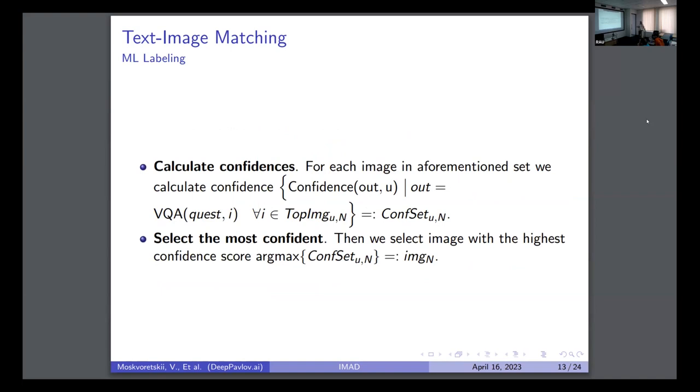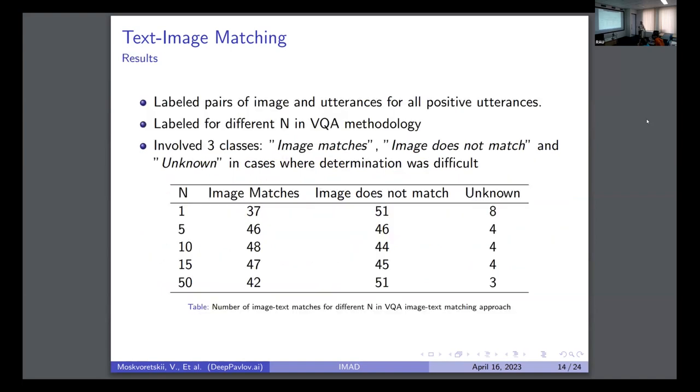And actually, this resulted in a very good manner. Here, we labeled a couple of samples, and we can see that we have image matches. It's when the image matches perfectly. You have image does not match and unknown when it was difficult. We have some optimal n when we have the maximum matches. This means that this approach is really working.